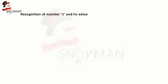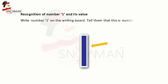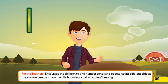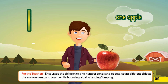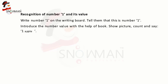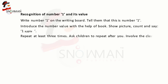Recognition of number one and its value: write number one on the writing board and tell them that this is number one. Introduce the number value with the help of the book — show the picture, count and say 'one apple.' Repeat at least three times and ask children to repeat after you. Involve the class in this process.